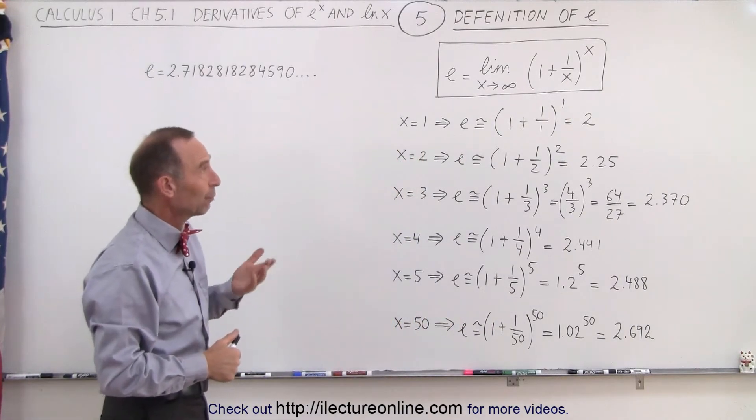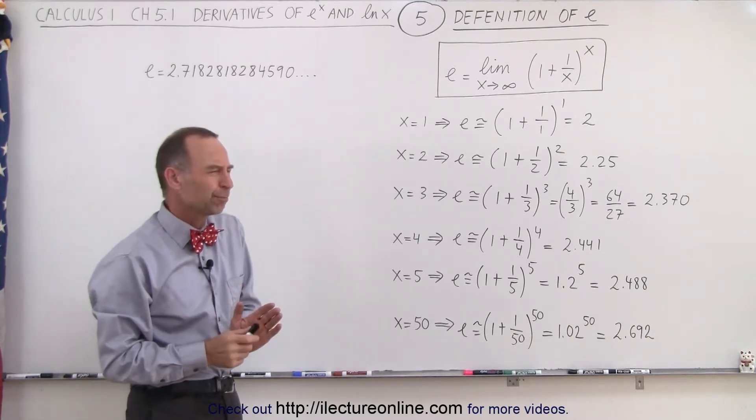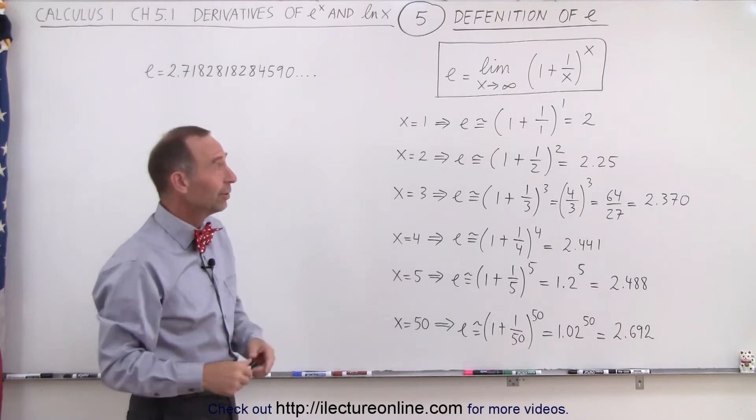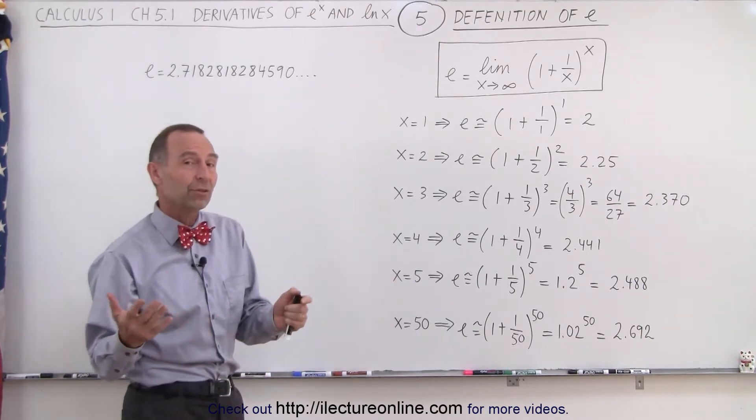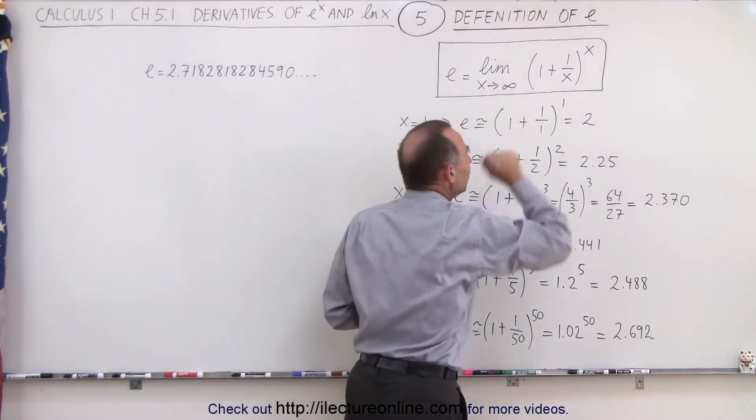So by the time you get to infinity, you would have 1 plus 1 over infinity raised to infinity power. Now of course, 1 over infinity, well by definition that would be 0 and it would be 1 to the infinite power which you think would be 1. But it's not the case. You don't actually plug infinity into x.